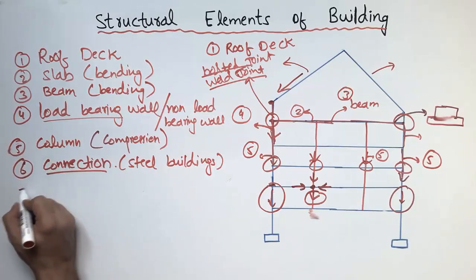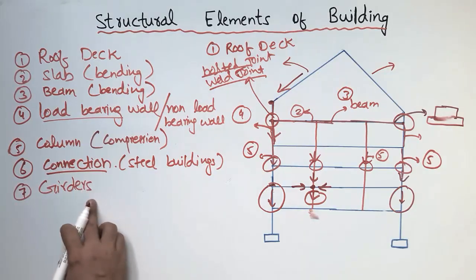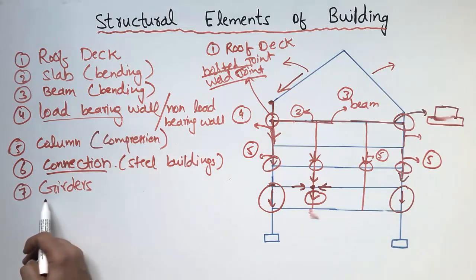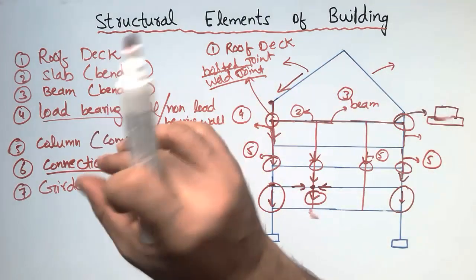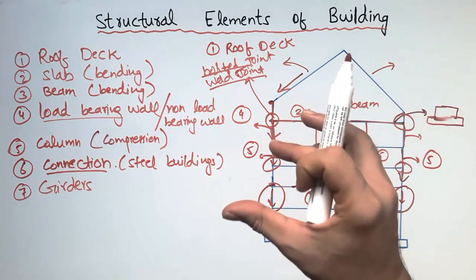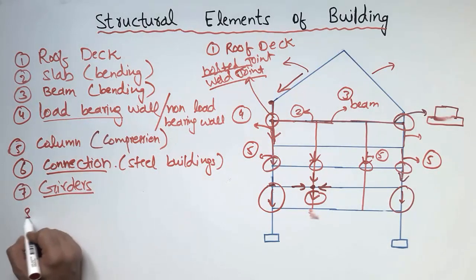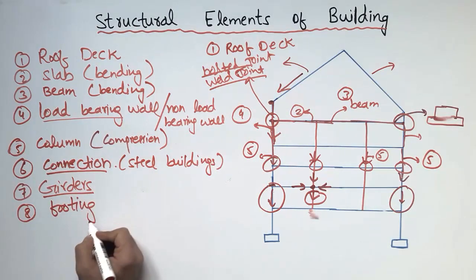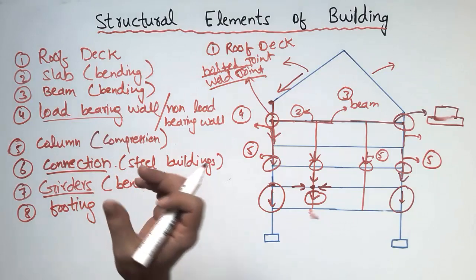The seventh structural element is the girder. Girders are provided beneath the beams and are greater in thickness than regular beams. They are also called primary beams because they take the load from smaller beams and transfer it through a larger cross-section. Girders are also designed for bending, behaving similarly to beams but with more thickness.